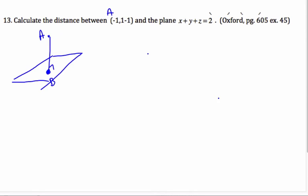Well, in doing so, I can find this line here. And so to find that line, we'll call it line AB. It has a starting point, which is (-1, 1, -1).